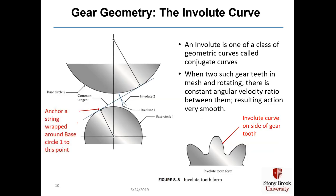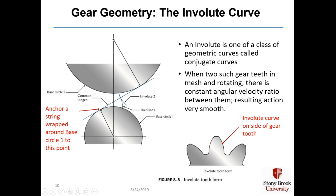Let's discuss the involute curve. An involute curve is one of a class of geometric curves called conjugate curves. They're non-linear and there's no equation that you can write that governs an involute curve. Here's how you would form involute curves one and two: wrap a string around base circle one, anchor it and tie a pencil to the string. When you rotate the pencil, you form involute one.